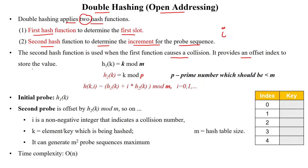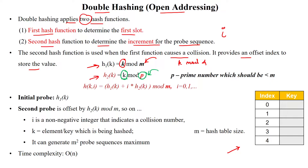The second hash function is used whenever the first function is affected with collision. It provides an offset index to store the hash value. The first hash function is h1(k) = k mod m, where m is the table size. If a slot is not found due to collision, then we will apply the second hash function h2(k) = k mod p, where p is a prime number less than the table size.